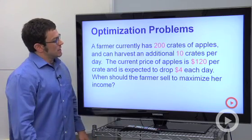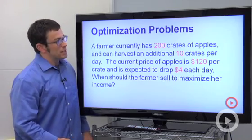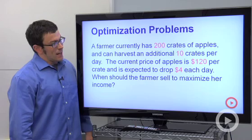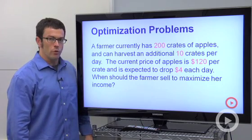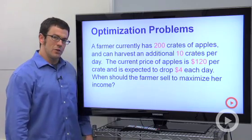Let's read this one. A farmer currently has 200 crates of apples and can harvest an additional 10 crates per day. The current price of apples is $120 per crate and is expected to drop $4 each day. When should the farmer sell to maximize her income?